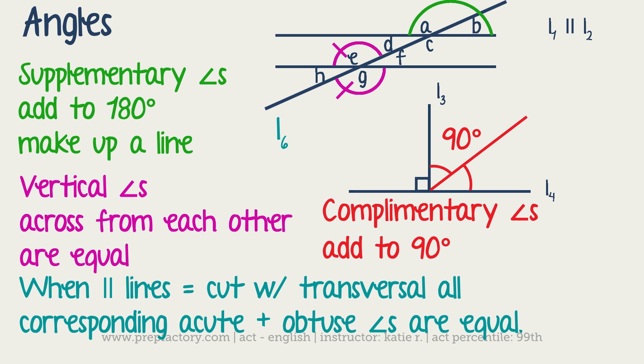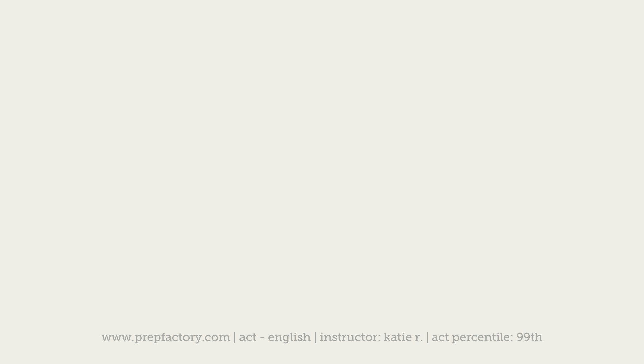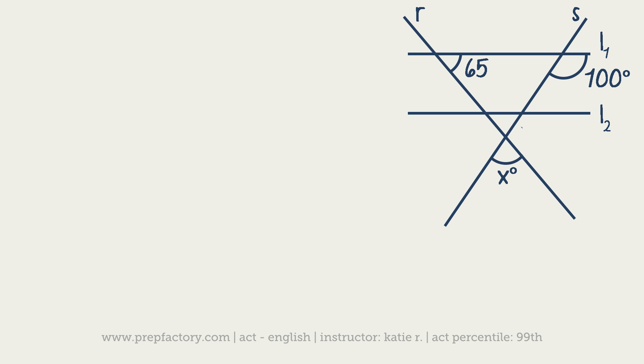Using all those definitions, let's go ahead and try a real life problem. Here's an example of a problem. You'd see this figure and they would say something along the lines of: in the figure below, L1 and L2 are parallel lines, transversals R and S intersect at a point, and all the other angle measurements are labeled. Find the value of X.